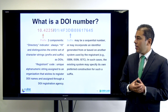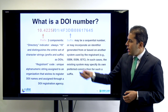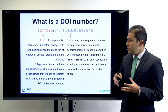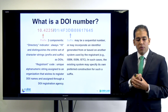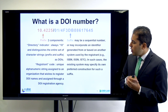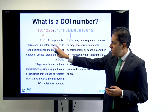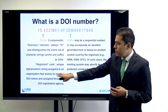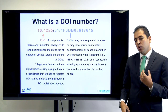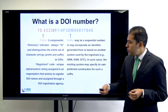How does a DOI look? You will always have a prefix with two components. There is a directory indicator — always number 10 — which distinguishes the entire set of character strings. Then it is followed by a registered code; for example, here I have 10 as the prefix and then the registered code is 4225. This is the authority that is registering the DOI and they have an identical number.